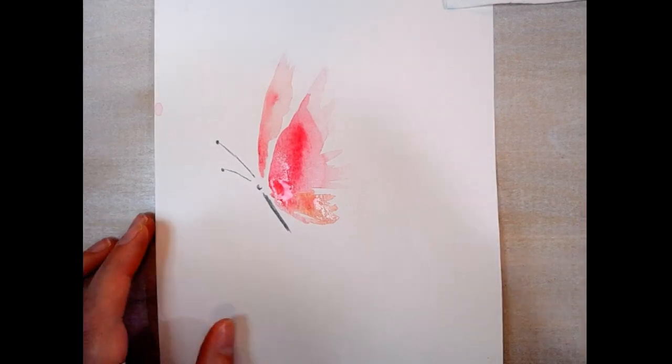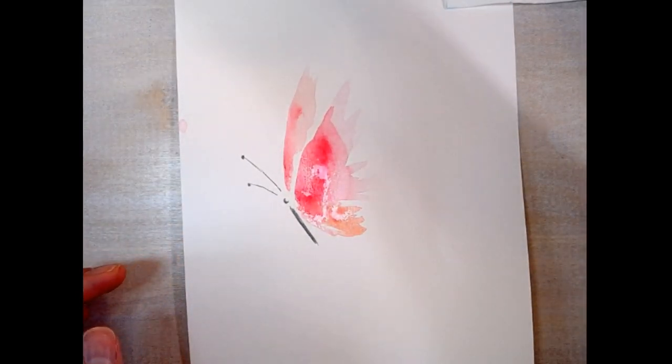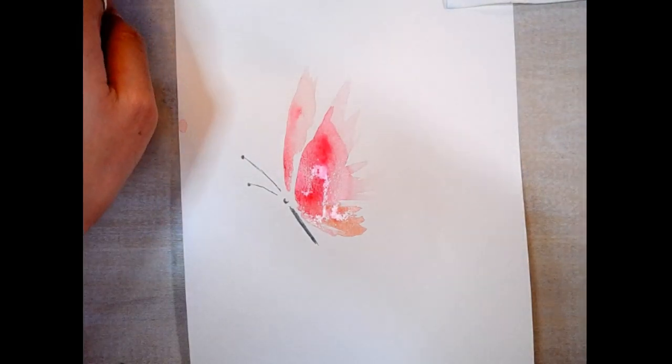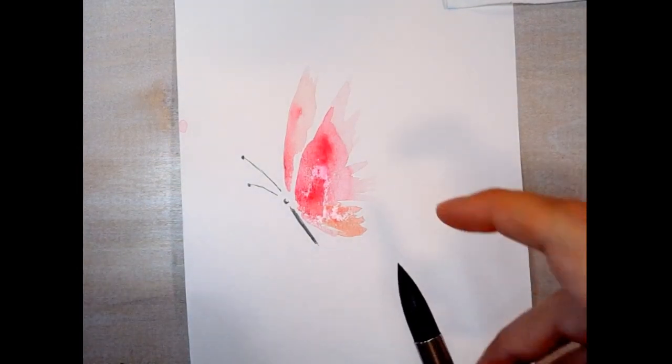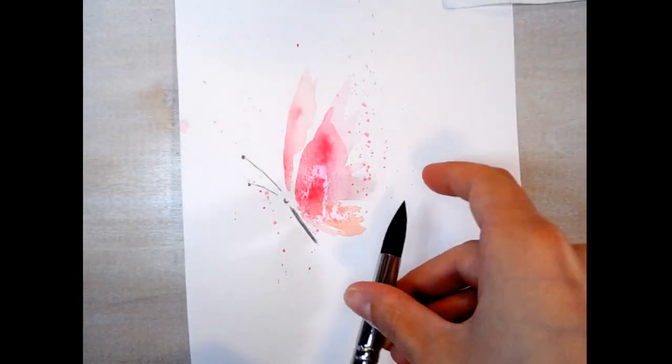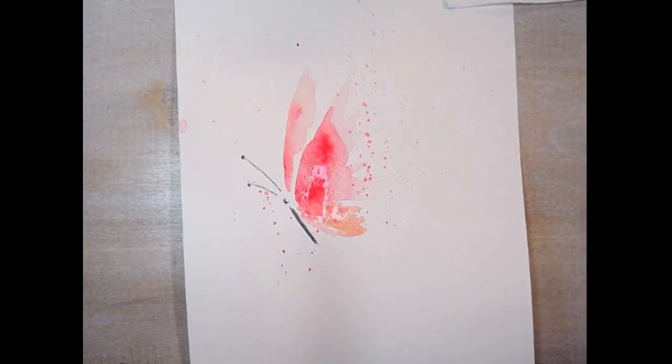Okay, and because this is a loose butterfly, let's do a little spritz of color. So, I'm getting a lot of water and some pigment on my brush and I'm actually just going to flick right over top of it. Just enough to give it that fun look. There you go. We have our loose watercolor butterfly.